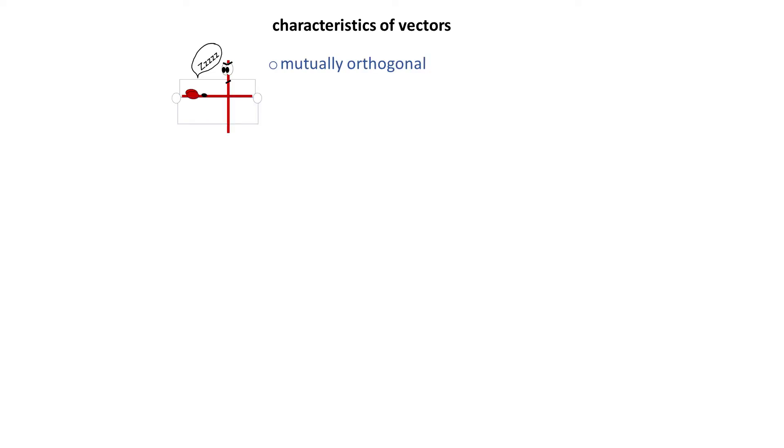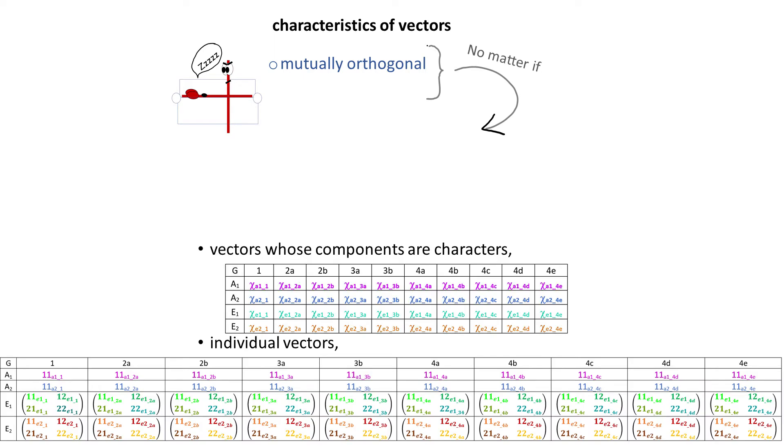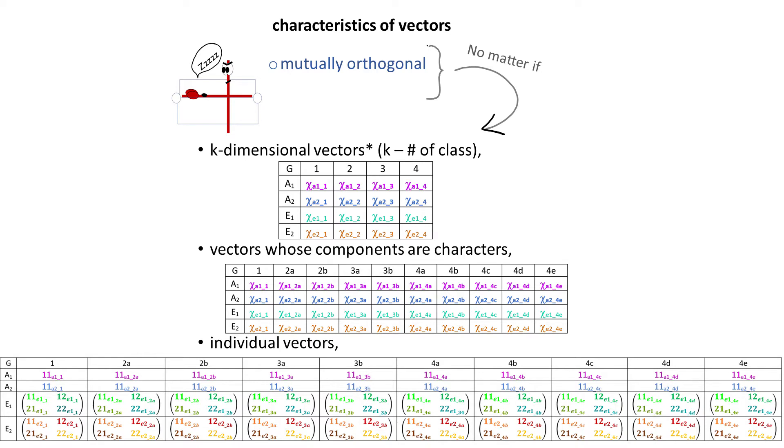They are mutually orthogonal. This characteristic holds no matter if we talk about individual vectors in a group or vectors whose components are characters. The vectors which have as many components as there are classes in the group also behave in the same way. Only remember to include gp in a formula.